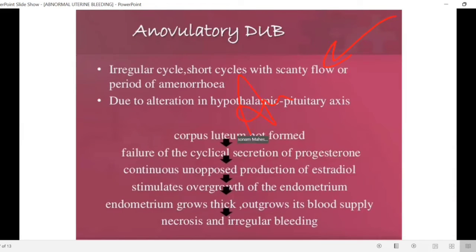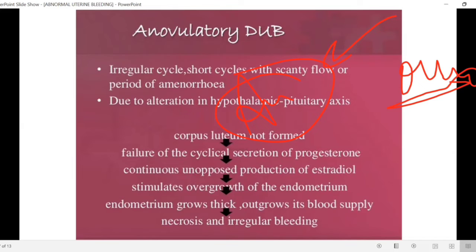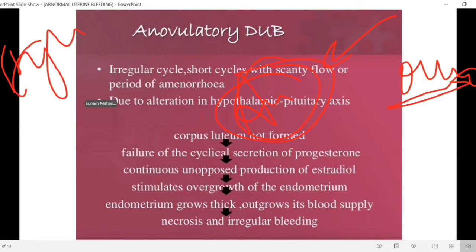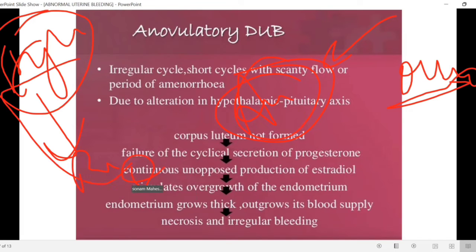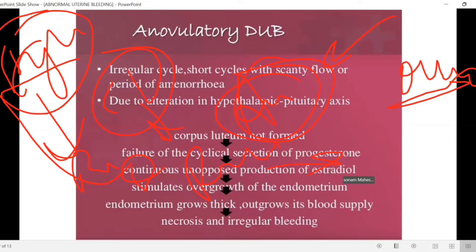Dysfunctional uterine bleeding is divided into two types: anovulatory cycle and ovulatory cycle. In anovulatory DUB, the hypothalamus-pituitary-ovary axis has a problem such that corpus luteum formation does not happen. Without corpus luteum formation, progesterone production does not occur, so estrogen remains unopposed and continuously stimulates the endometrium.